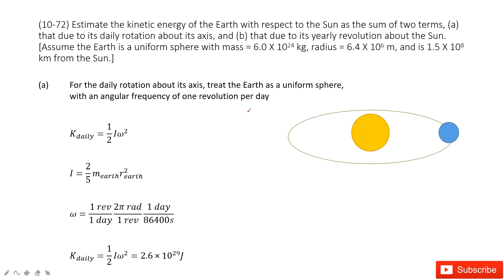In this chapter, we talk about rotational motion. In this system, it's the Earth and the Sun system. We need to find the kinetic energy for the Earth and Sun system.